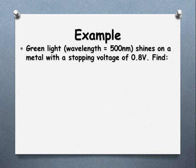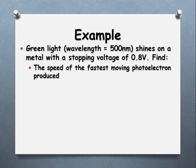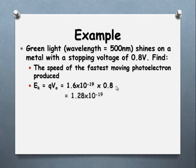Let's look at an example. We've got green light with wavelength 500 nanometers and a stopping voltage of 0.8 volts. Find the speed of the fastest moving photoelectron produced. We've got E equals QV naught, the charge times the stopping voltage. That gives us the kinetic energy of 1.28 times 10 to the negative 19 joules.